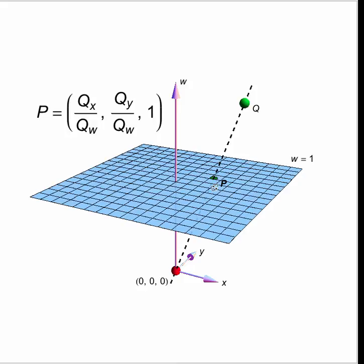It's QX over QW, QY over QW, and, of course, the W value for P itself, being on the W equals one plane, is just one.